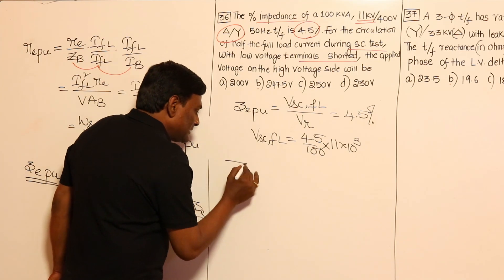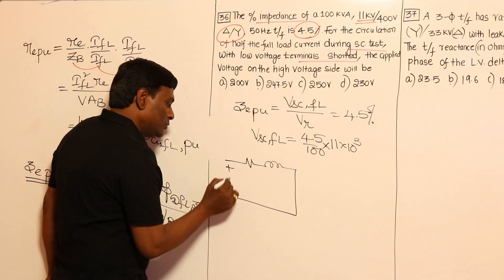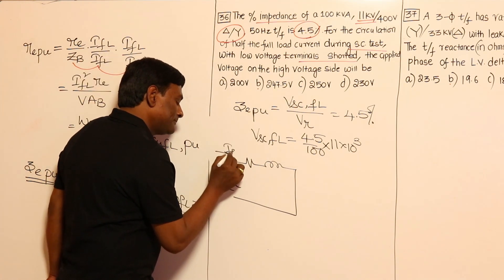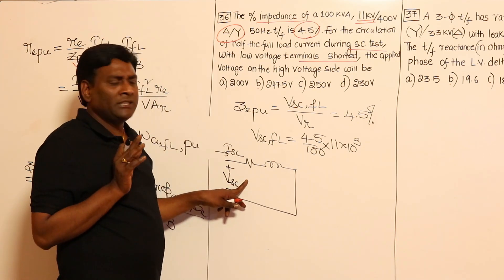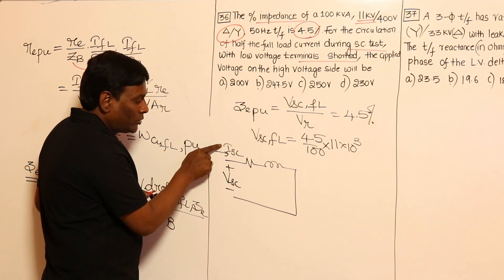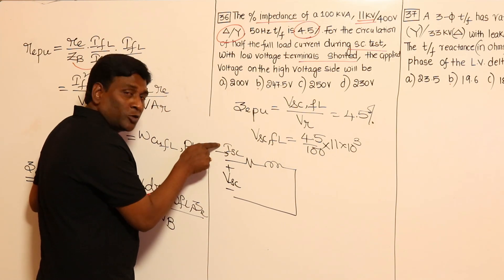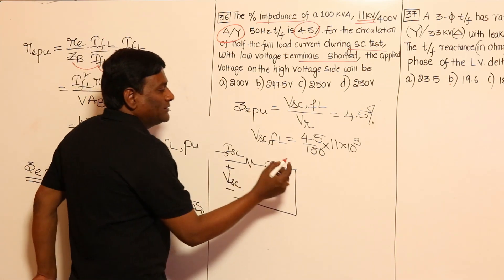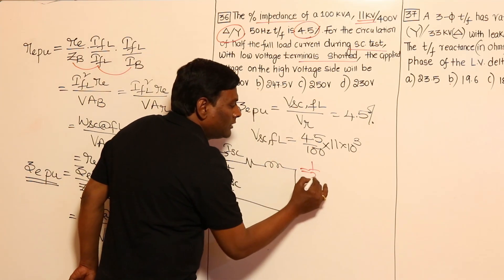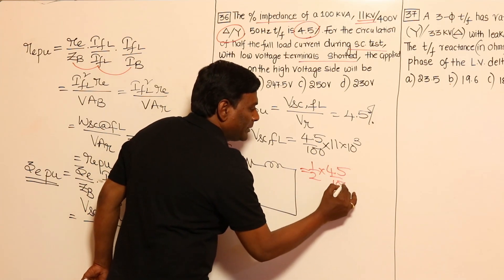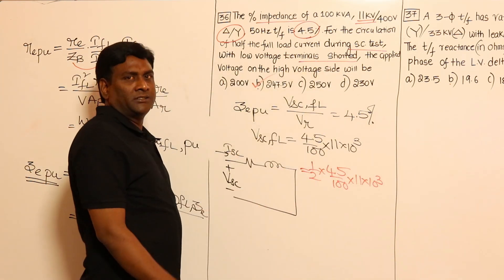In the SC test, since the circuit is linear, if the current has to be half (half full load), the voltage also has to be half. VSC at full load equals 4.5% × 11 kV. For half full load, the answer is half of that: 0.5 × 4.5% × 11 kV, giving the answer of 247.5 V.